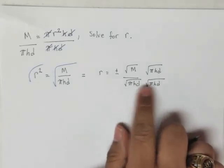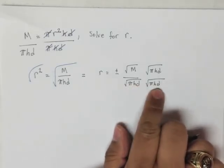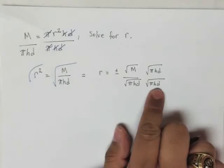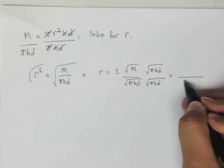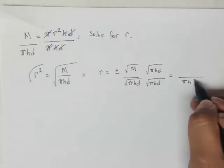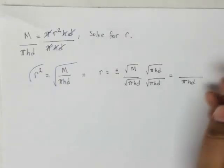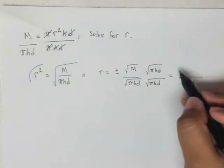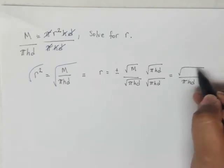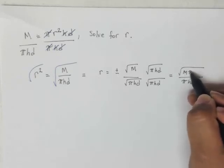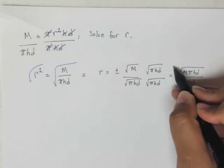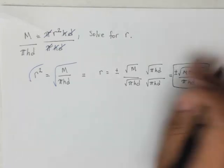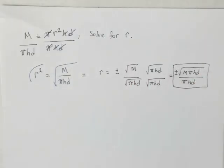Now what happens, in effect, is that we're squaring the denominator. And what happens when you square a square root? You're right. You get rid of it. So in the denominator we're going to be left with πhd. In the numerator we're going to have the product of these two square roots, which is the square root of m times πhd. And don't forget that famous plus and minus. And this right here will solve our equation here for r. So it all boils down to this right here.